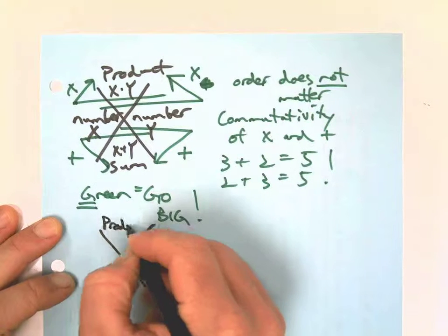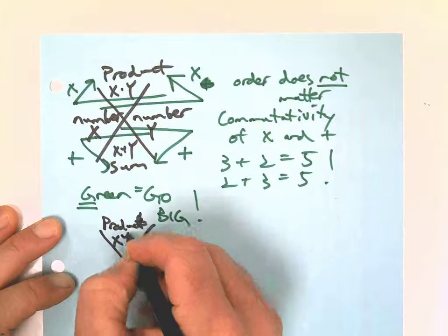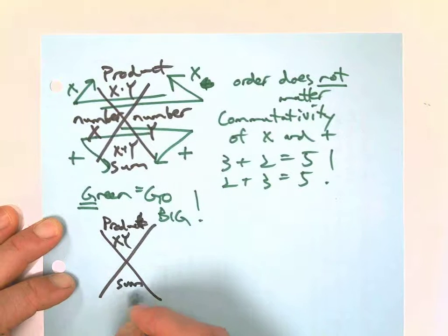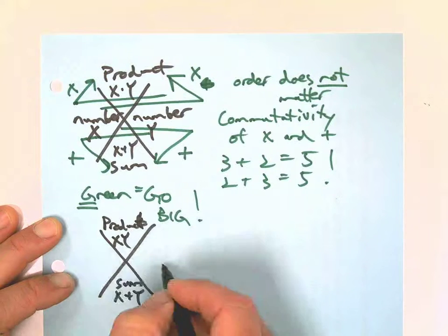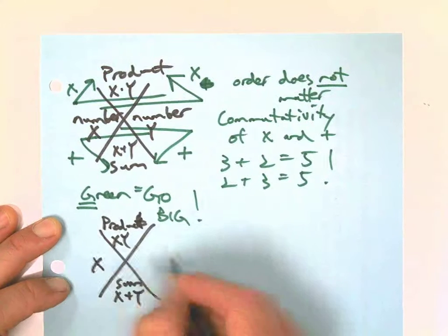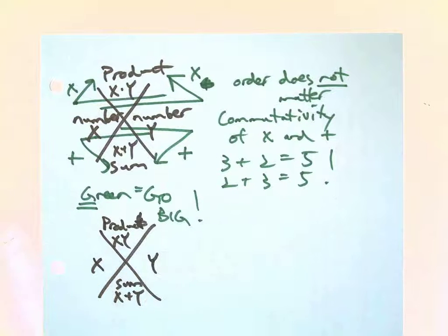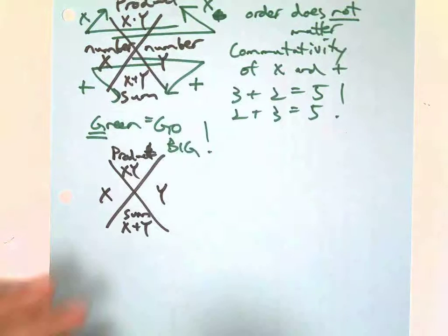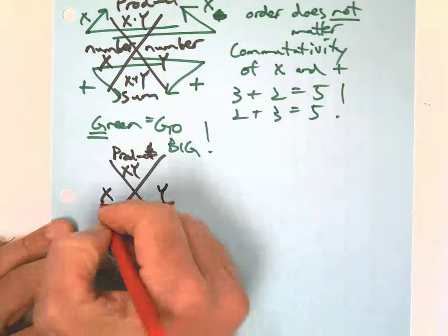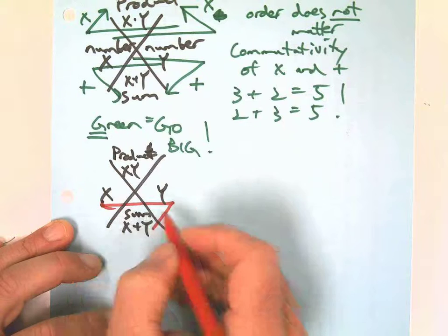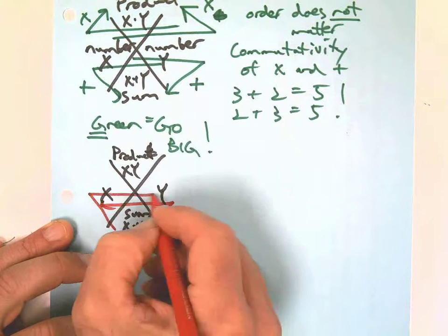Now, sometimes you're given the product or the sum, and you have to find out what the numbers are. So instead of using green for that, I'm just going to use red because I don't know, I like red. Hope that's okay.